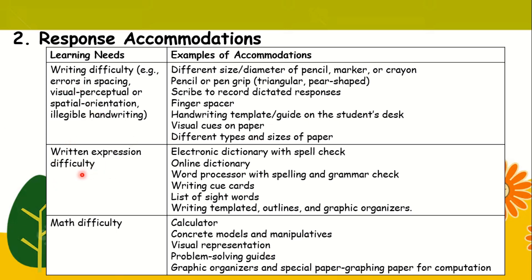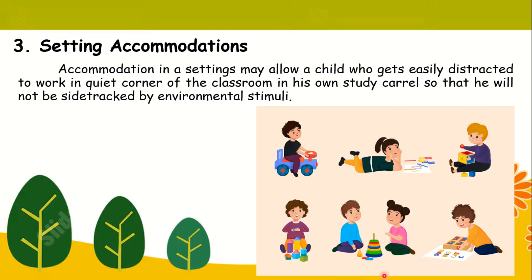Next is written expression difficulty. You might use the electronic dictionary with spell check, online dictionary, word processor with spelling and grammar check, writing cue cards, list of sight words, writing templates, outlines, and graphic organizers. Next for math difficulty, you might use the calculator, concrete models and manipulatives, visual representation, problem-solving guides, graphic organizers, and special graphing paper for computation.